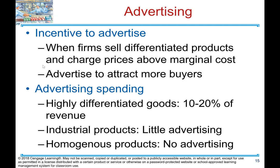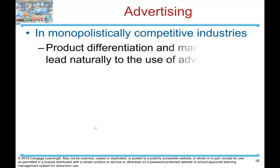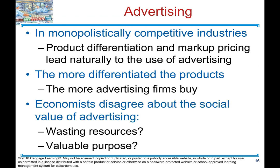Let's talk about advertising. The incentive to advertise arises when firms sell differentiated products and charge prices above marginal cost — they advertise to attract more buyers. Advertising spending varies: for highly differentiated goods, firms spend 10 to 20 percent of revenue on advertising; for industrial products, there is little advertising; for homogeneous products, there is no advertising at all — no need to advertise if the product is homogeneous. In monopolistically competitive industries, product differentiation and markup pricing lead naturally to the use of advertising. The more differentiated the product, the more advertising firms buy.